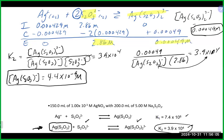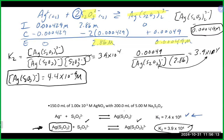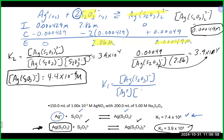Now that we have [AgS₂O₃⁻] = 3.8×10⁻⁹ M, and we still have the thiosulfate concentration, we can use the first stepwise equilibrium K1 to find free [Ag⁺]. The K1 expression is [AgS₂O₃⁻] divided by [Ag⁺] times [S₂O₃²⁻], which equals 7.4×10⁸.